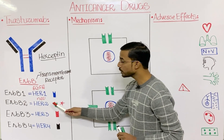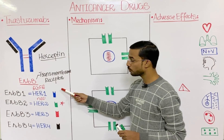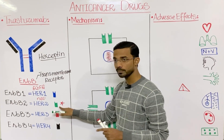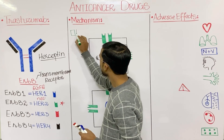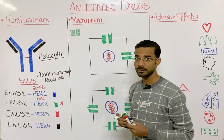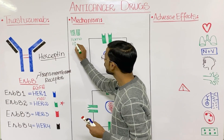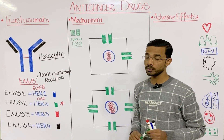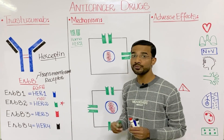Our most important receptor protein will be HER2 — human epidermal growth factor receptor 2. HER2 has the ability to dimerize with itself as well as with the other receptors HER1, HER3, and HER4. When two HER2 molecules combine or dimerize with each other, that is called homodimerization, because the same HER2 molecules are dimerizing.